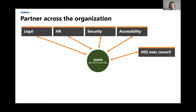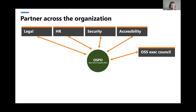HR is also key because we measure employees at Microsoft through quarterly evaluations. The questions are super relevant to open source: did they build on the work of others rather than inventing everything themselves, and did they help others succeed? That's key to open source engineering. We also work closely with the security and accessibility teams. The security team focuses on making sure the open source supply chain is secure — we recently joined the OpenSSF group out of the Linux Foundation. Accessibility is an area where we have a lot to contribute, and we've open sourced our accessibility tools for all open source software projects.